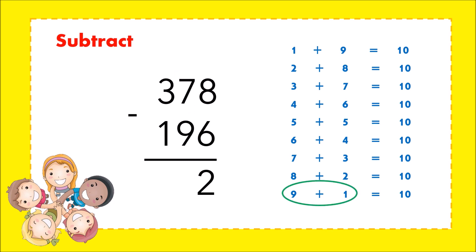Partner of 9 is 1. Add 1 to 7 and the answer is 8. Then borrow 1 from 3 and 3 becomes 2. 2 minus 1 is 1. Therefore, the difference of 378 and 196 is 182.